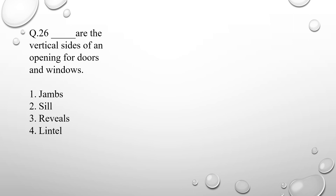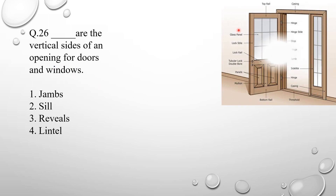Question number 26: blank are the vertical sides of an opening for doors and windows. Here they ask the vertical sides of an opening of doors and windows, and this figure is related to the door. The vertical opening in the door is called a jamb — the vertical opening in the door or window is called a jamb.